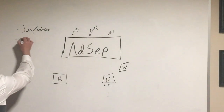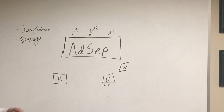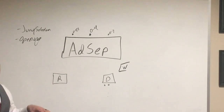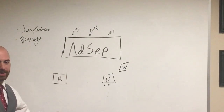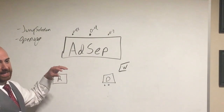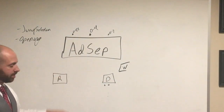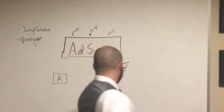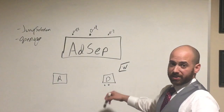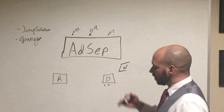After voir dire, you move on to opening statements. The recorder goes first and will state that the service member has poor performance, did what they're accused of, and should be separated with an other-than-honorable characterization. Then the defense gives an opening, arguing that the service member performs great and should be retained.